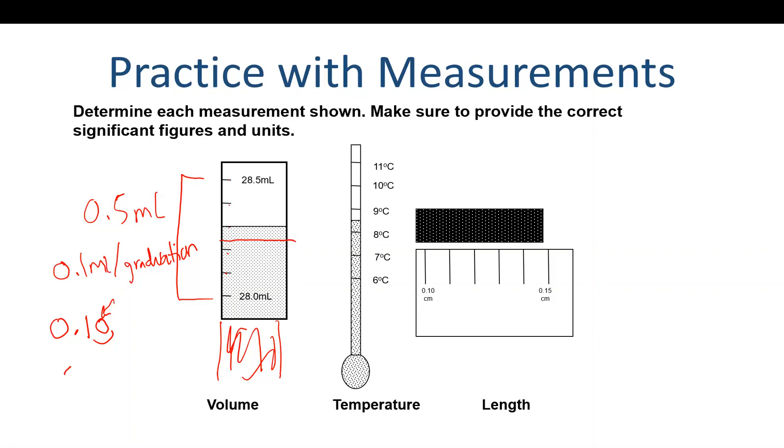So in this particular measurement, it might be 28 point, and we would think it's just 28.3 mils, but we should be able to go to the right, and it'd be 28.30 mils. And the reason why we want to put that 0 is to show that we're to the hundredths place with this measurement. We want to make sure that we put the unit.